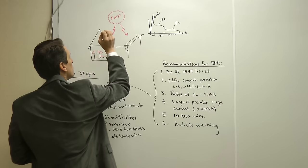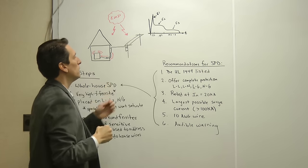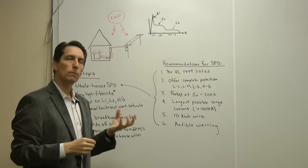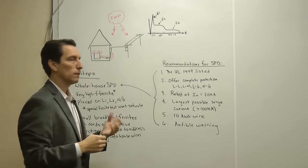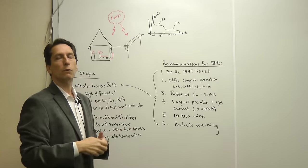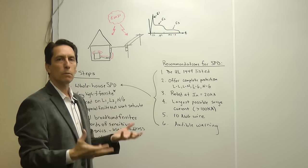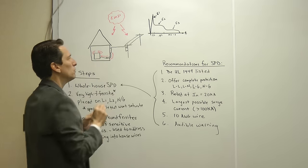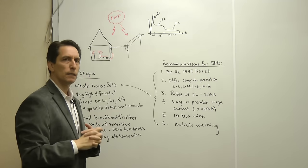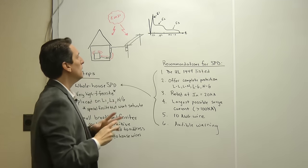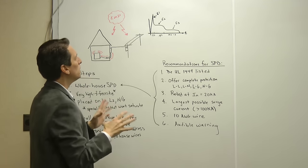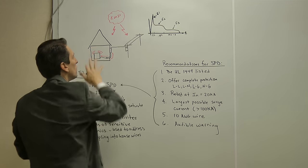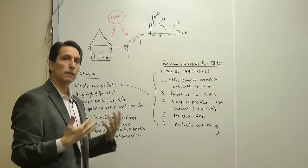An EMP also has an added threat: a very high frequency component that not only couples into long conductors but also into small conductors such as your cell phone or computers. That has to be addressed slightly differently, which I'll cover in a minute. But the primary threat is the conducted energy that comes in from the power lines into your home, and you'd like to address that in some way.